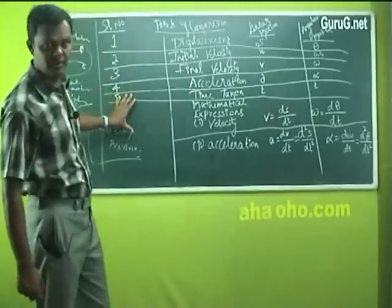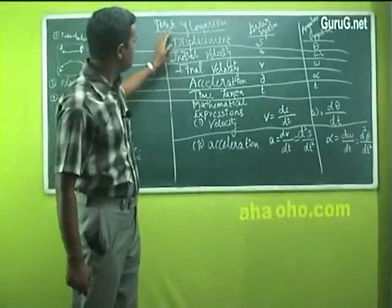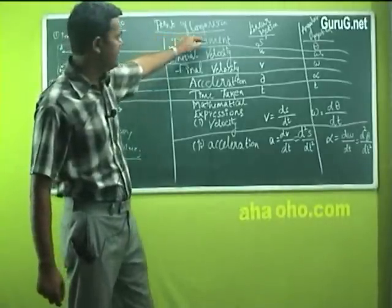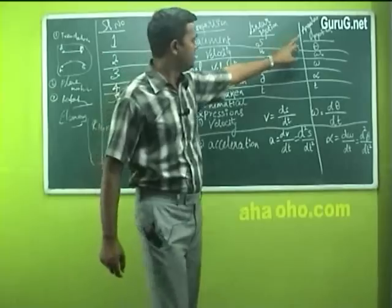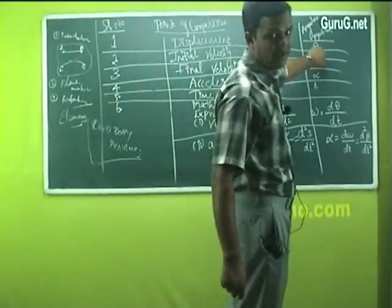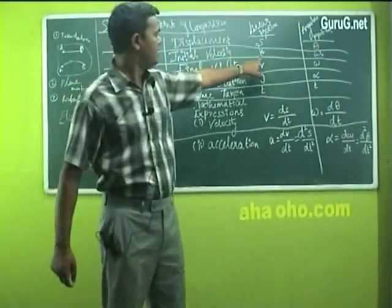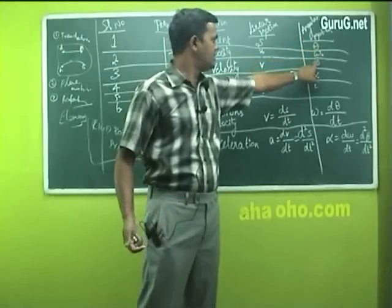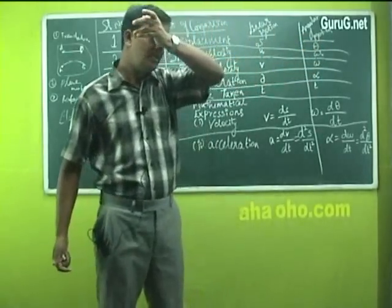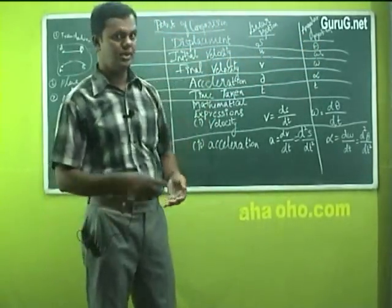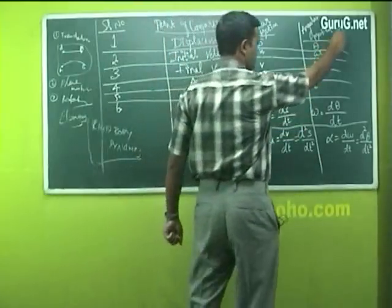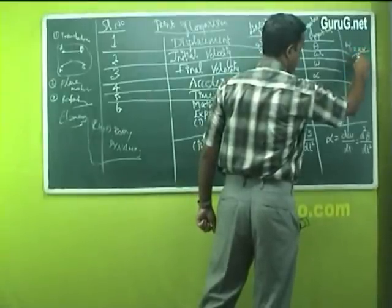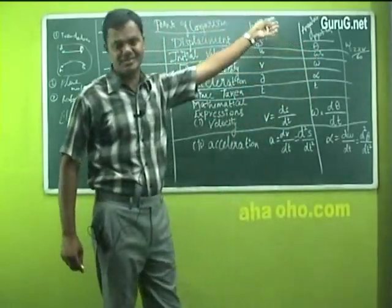To get an answer for this kind of either translation, rotation or your plane motions. Now here there are about six points given. What is this? To compare what? I am comparing displacement first. The displacement for a linear motion is given by symbol S, angular motion is given by theta. Then initial velocity U in terms of linear motion that we have already seen, angular motion in terms of omega 0. See basically what is omega here?